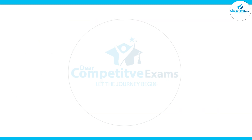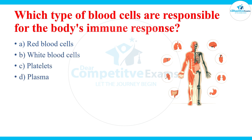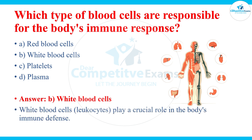Which type of blood cells are responsible for the body's immune response? The answers are red blood cells, white blood cells, platelets, and plasma. The answer is white blood cells, known as WBC. White blood cells are also called leukocytes and play a crucial role in the body's immune defense.